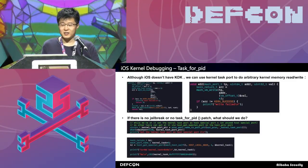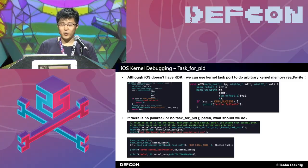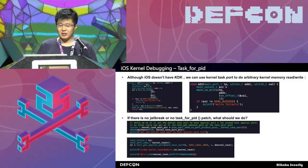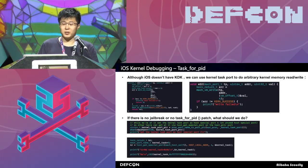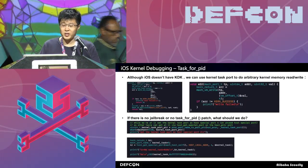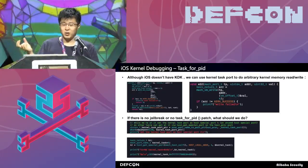Although there is no KDK in iOS, we can still use the kernel task port to do arbitrary kernel memory read and write through two userland APIs: mach_vm_read and mach_vm_write. But what if we don't have the task_for_pid patch or no jailbreak? You first need a kernel vulnerability. Then you can use this vulnerability to get the kernel task port. Then you can restore the kernel task port into the host special port. Then you can use the userland API host_get_special_port to get the kernel task port in userland.